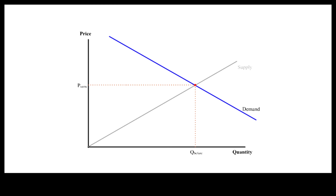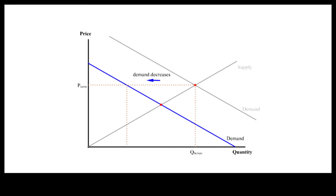When less is demanded at the same price, demand rather than quantity demanded is said to have decreased. After the market clears, a smaller quantity is sold at a lower price when demand decreases.